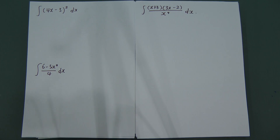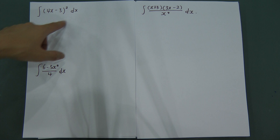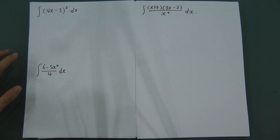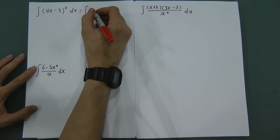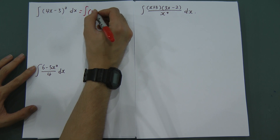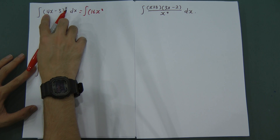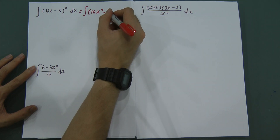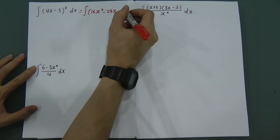For this one, you are asked to integrate (4x - 3)². The first thing you do is expand the square. When I expand it, I get 16x² and then 2 multiplied by negative 3 multiplied by 4 gives negative 24x, plus 9.